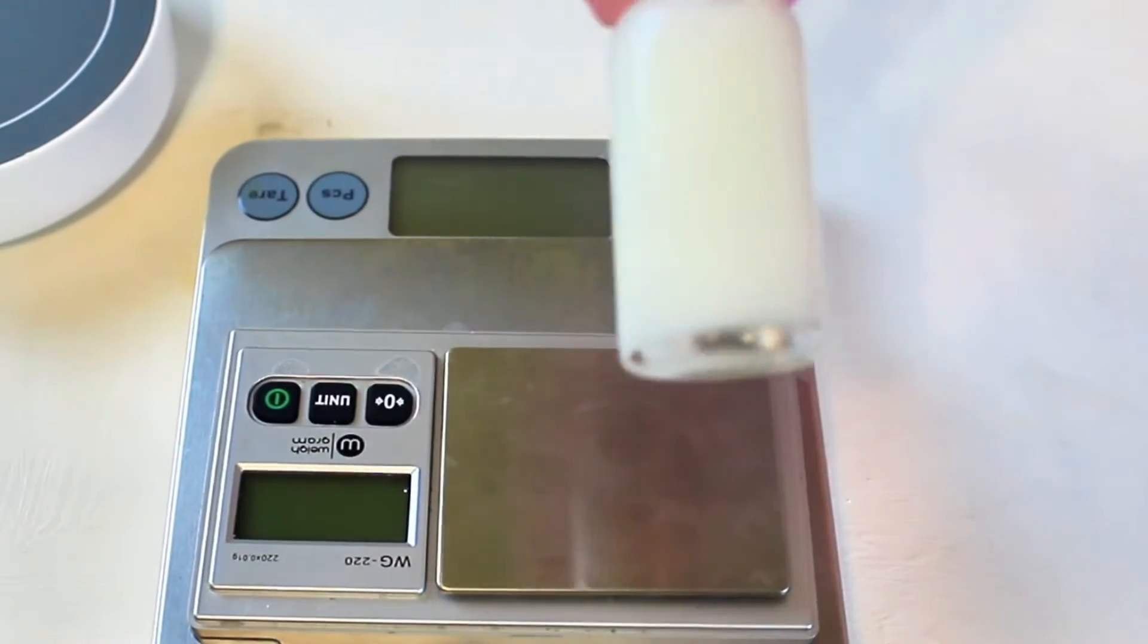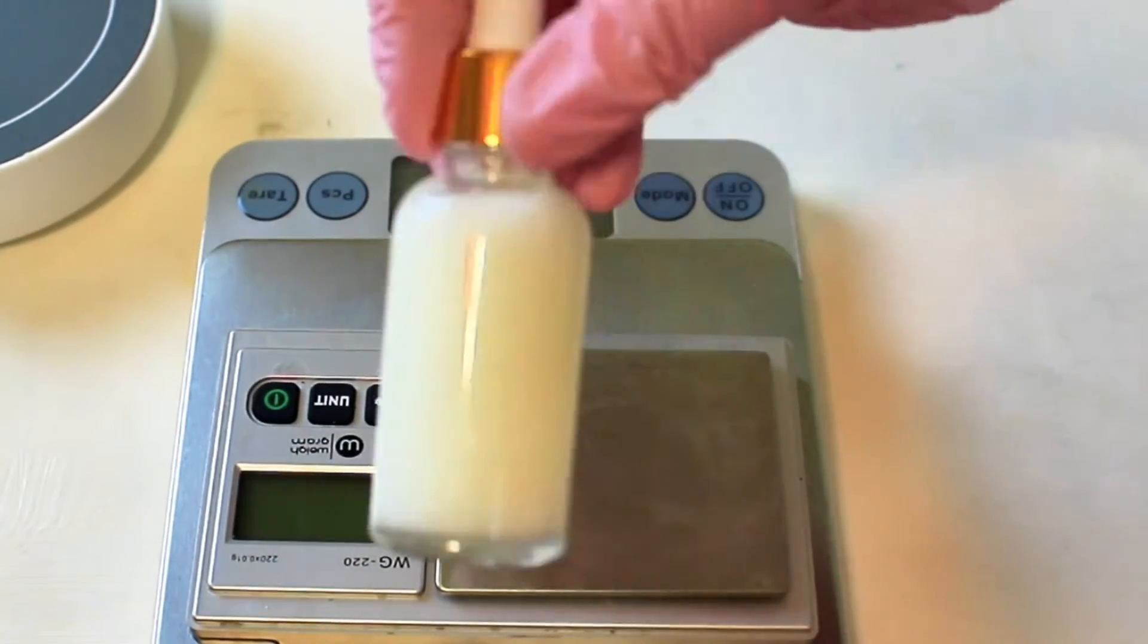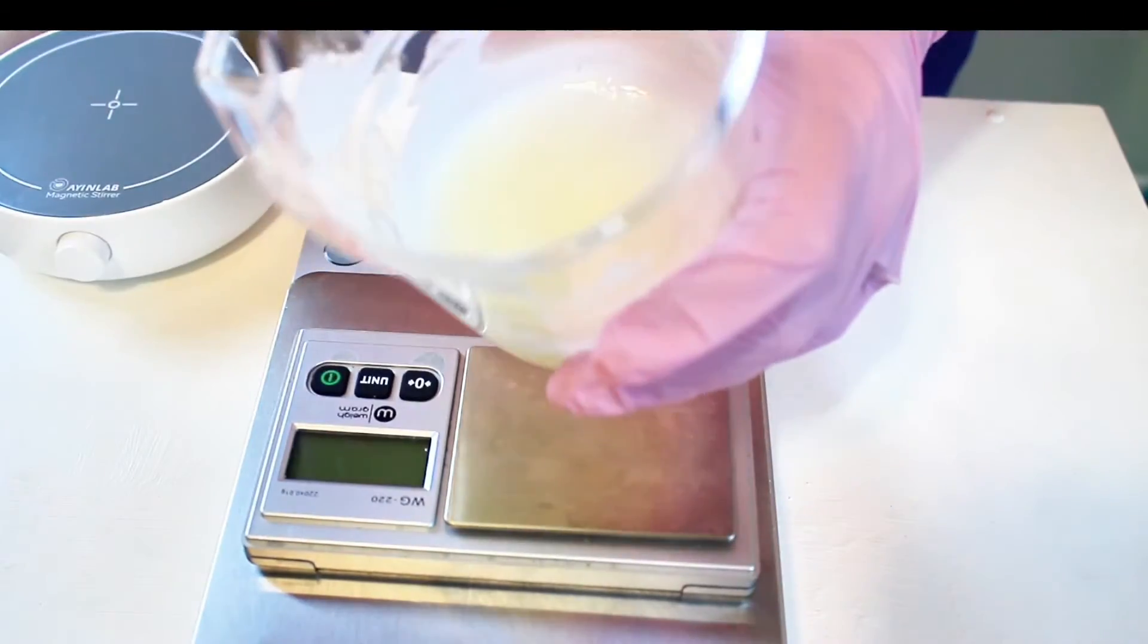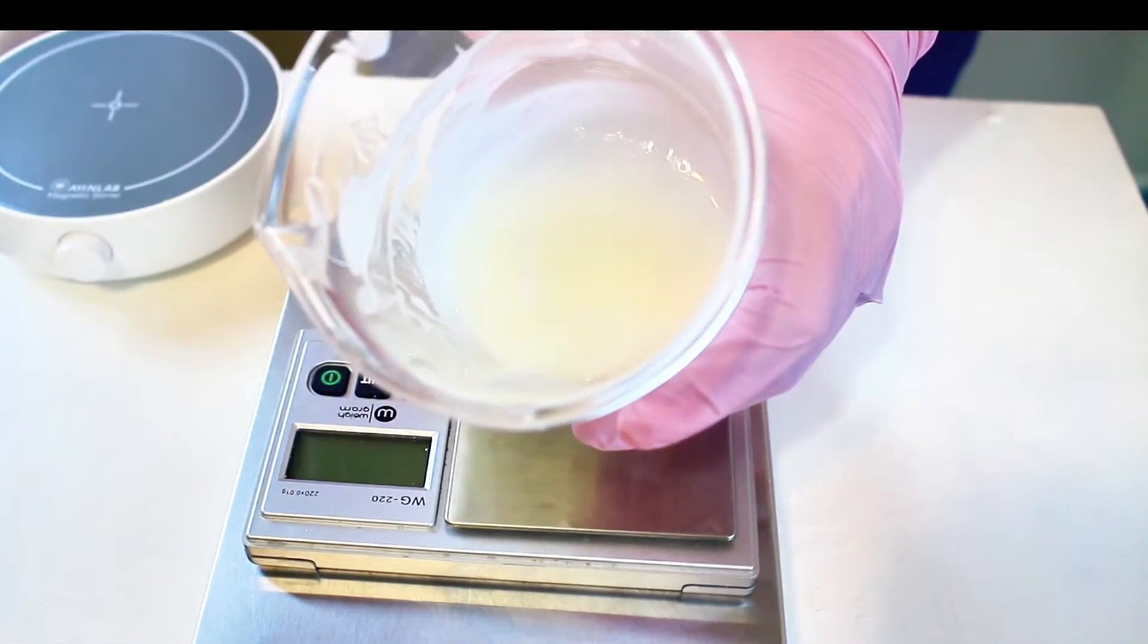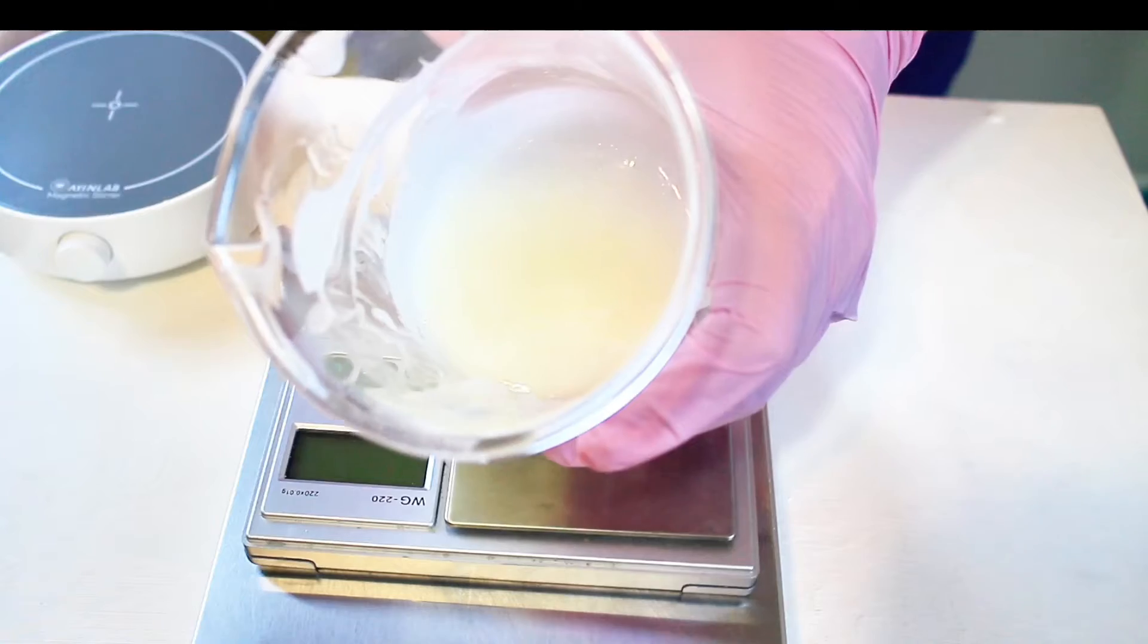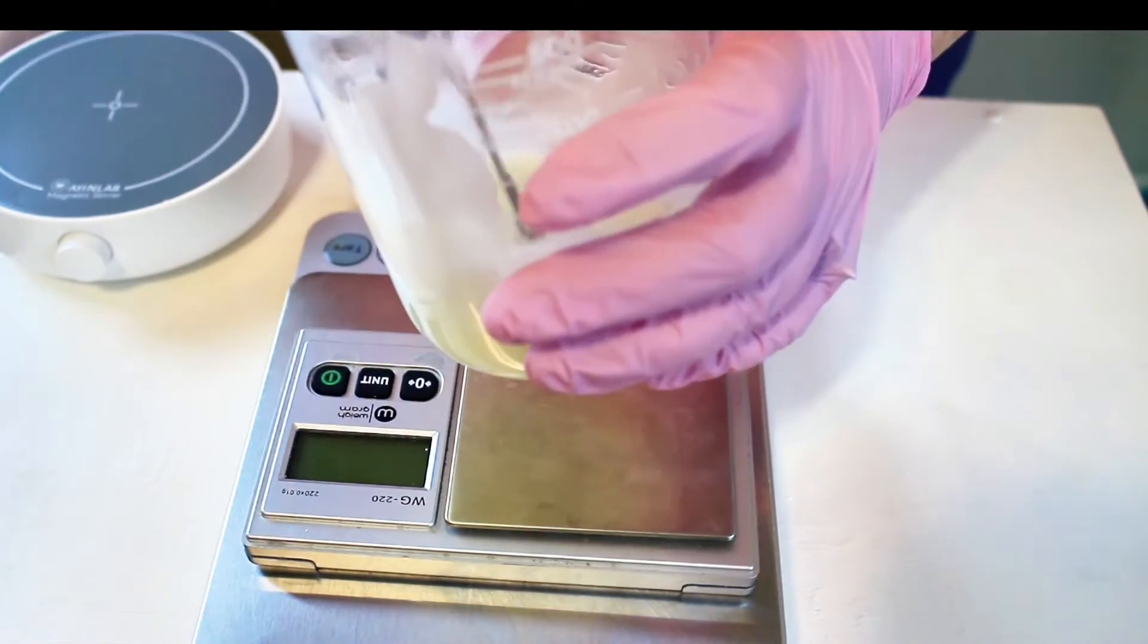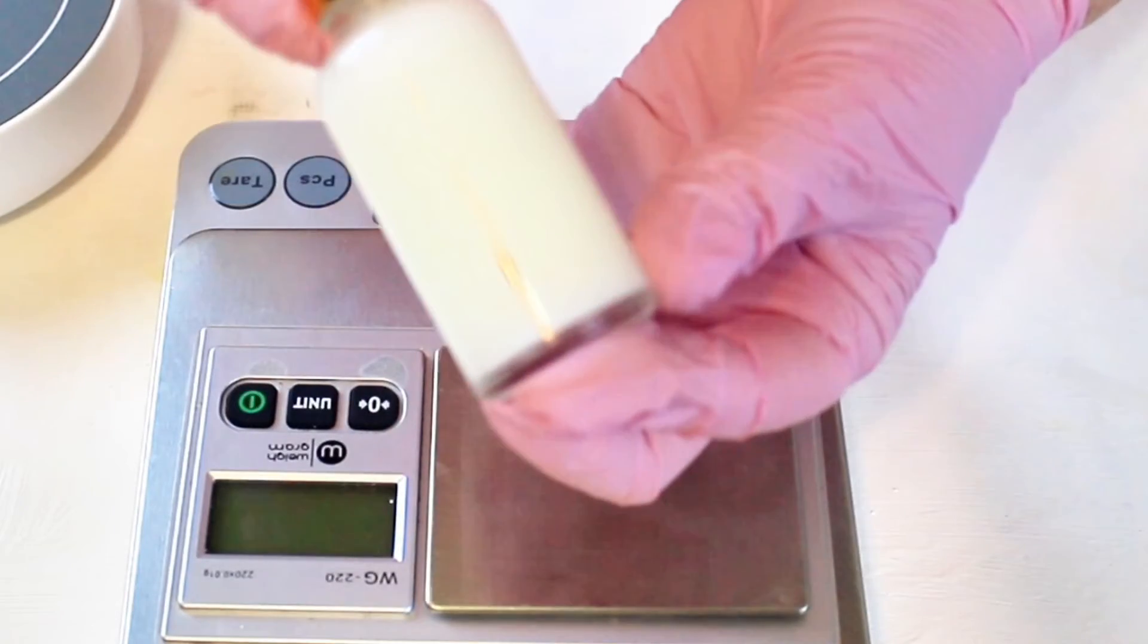And later on in the video, we'll talk about a super important additive that you'll want to use to prevent your serum from turning dark. I designed this to resemble a milky white serum, and to keep it white, we'll need to use this ingredient.